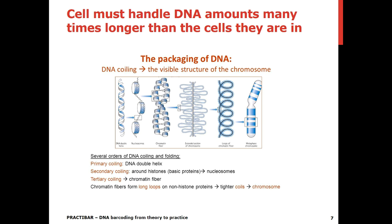Cells must handle amounts of DNA many times longer than the cells that contain them. In order to achieve this, several orders of condensation, by coiling and folding the DNA, are applied — from the DNA double helix structure, to the secondary coiling forming nucleosomes, to the chromatin fiber, and packing in even tighter coils, all the way to the chromosome structure.